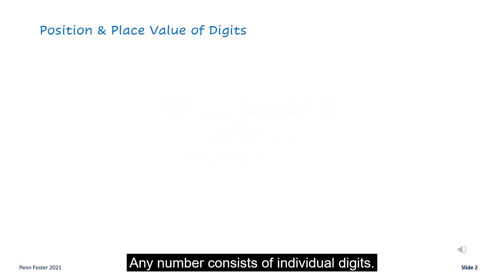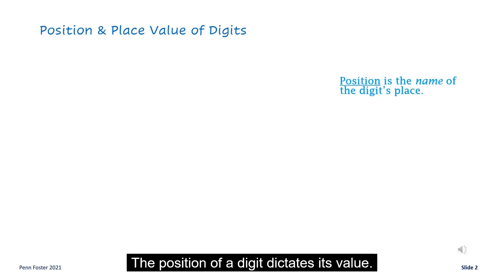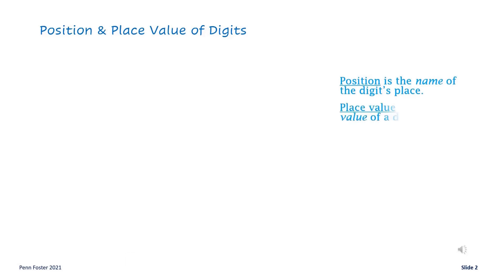Any number consists of individual digits. Each digit holds a position in the number it belongs to. The position of a digit dictates its value.